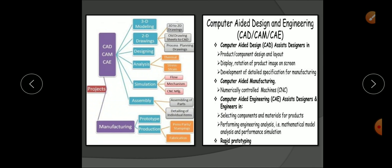For product development we use Computer-Aided Design (CAD), Computer-Aided Manufacturing (CAM), and Computer-Aided Engineering (CAE). After idea generation and conceptualization, the steps are 3D modeling, 2D modeling, design analysis, simulation, and assembly. In 2D and 3D drawing we use process planning drawings, thermal, stress, strain, and flow simulations, CNC manufacturing, and assembly — detailing individual items for manufacturing, including press parts, stampings, and fabrication.